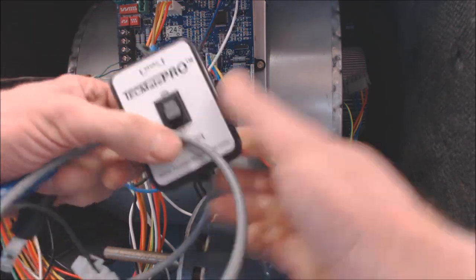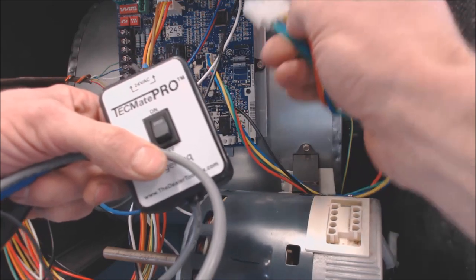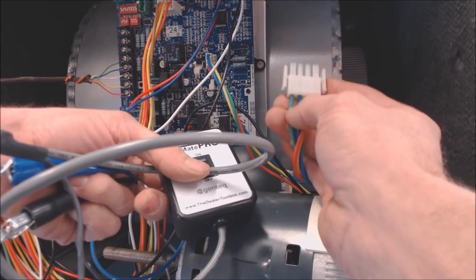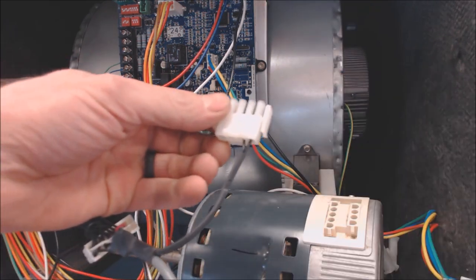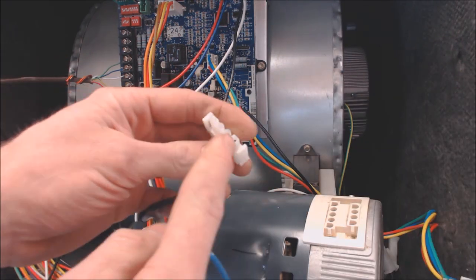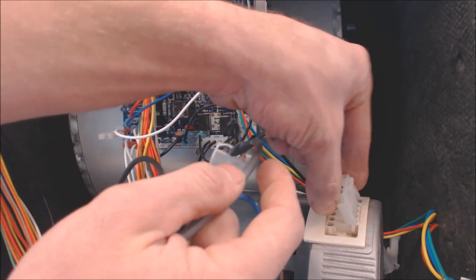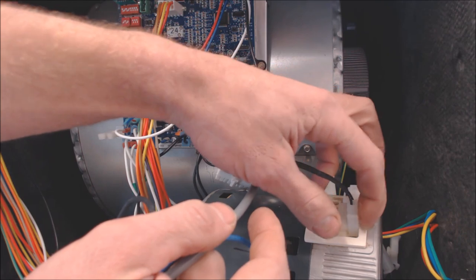As long as you get 24 volts onto, in this case, it happens to be the blue and green wires, but you should not go by colors. So these two wires on the TechMate Pro are connecting here and here. And if you notice, when I plug this in, I'm connecting it to the front two right here.